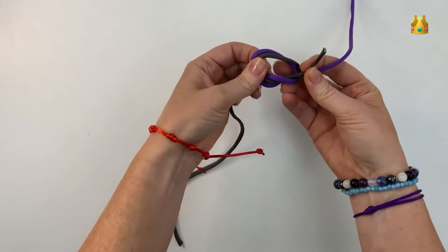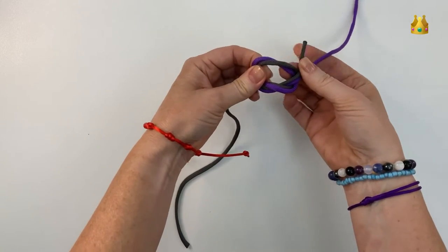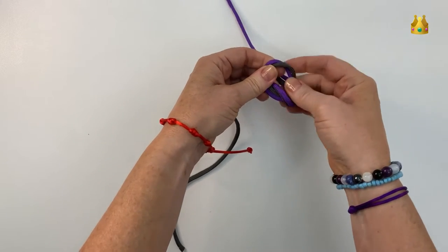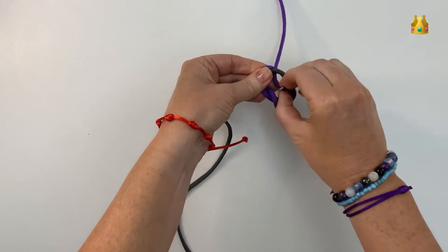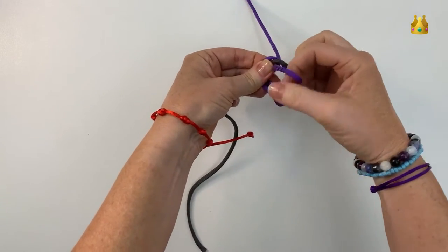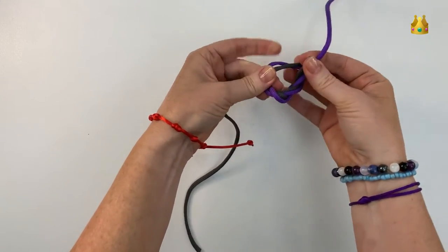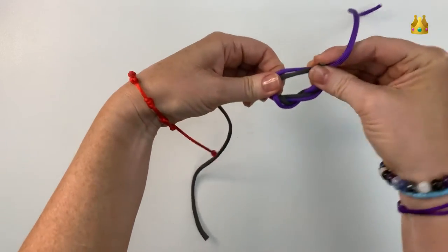Now we bring them around again for another loop, so just passing these right side cords around and up the loop. Making sure both cords come through.